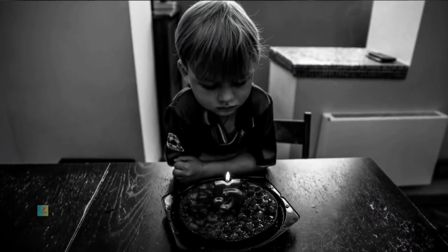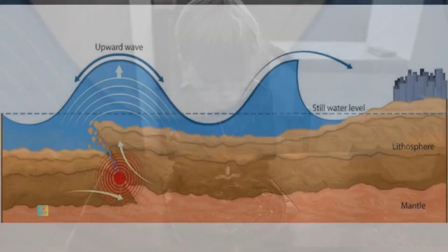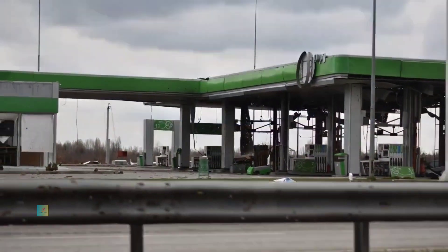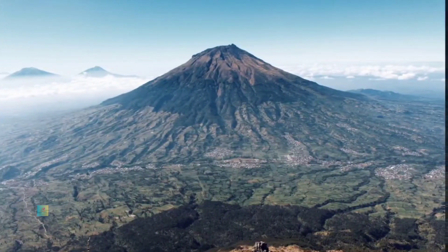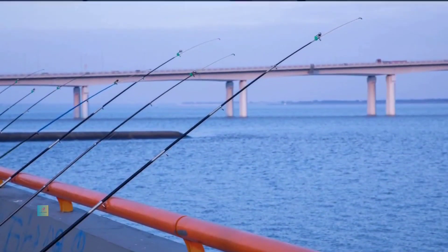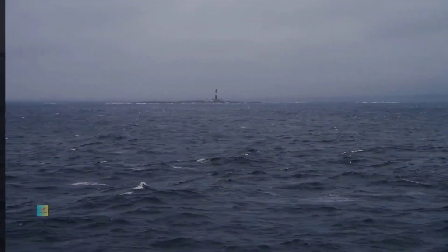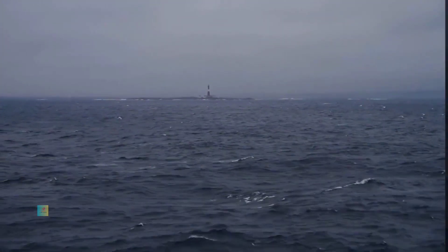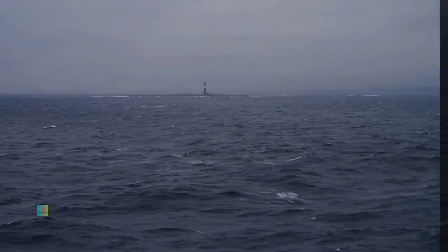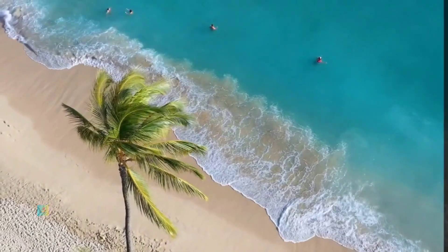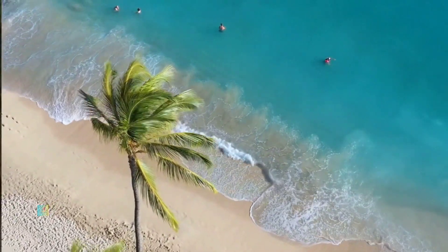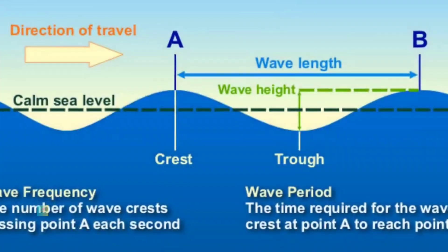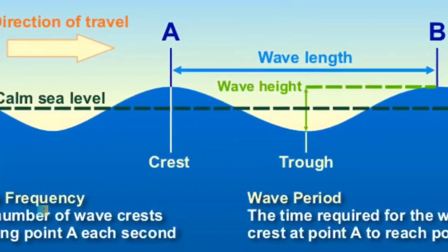Generation of Tsunami Waves: When a geological event occurs — whether it's an earthquake, submarine landslide, or volcanic eruption — it imparts energy to the water column above. This energy is transferred to the water molecules, causing them to move in a circular motion. Initially, the waves may have a relatively small amplitude and travel at high speeds across the open ocean, often undetected by ships due to their long wavelengths.